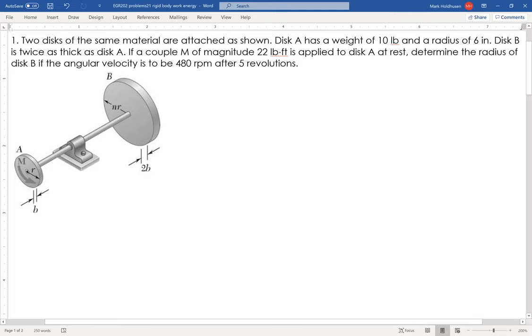I've got two discs, same material. Disc A weighs 10 pounds, radius of 6. Disc B is twice as thick as disc A. I apply a couple moment at disc A. I want to find the radius of disc B so that the angular velocity is 480 rpms after 5 revolutions.